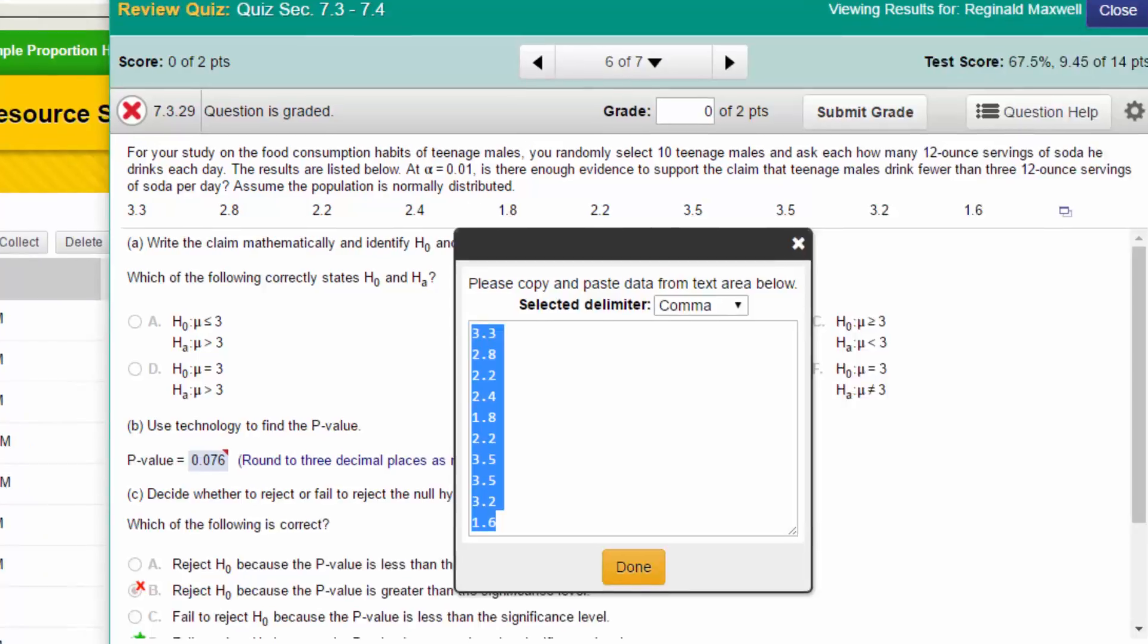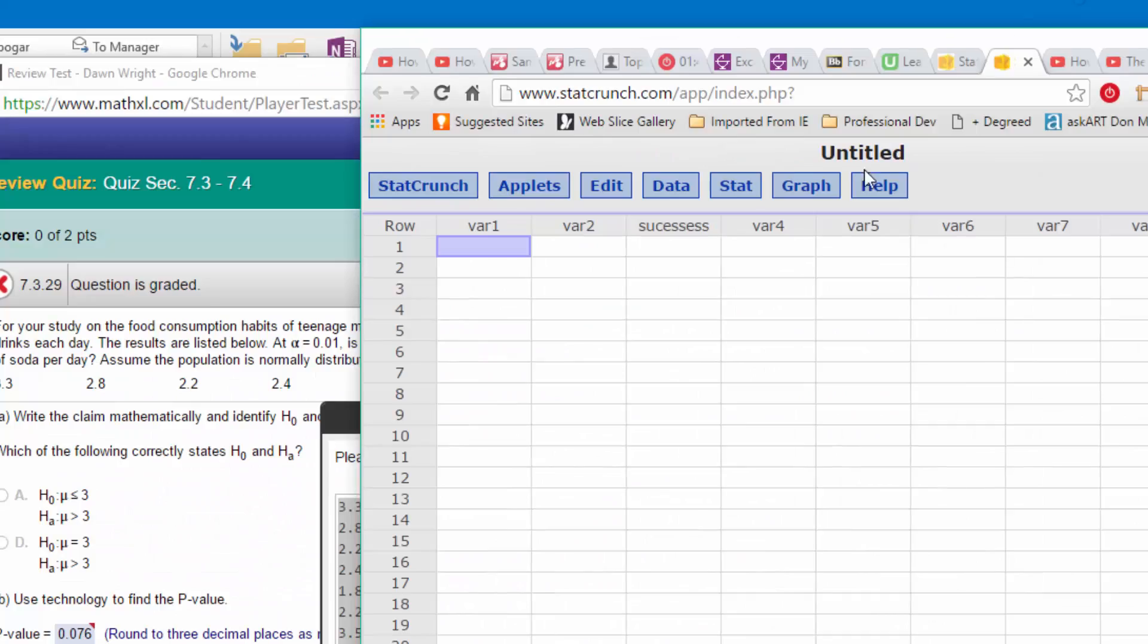Now let's go to StatCrunch and I want to paste in that data, so Control V. Now I've got the data in this first column called variable one, and we're going to run a hypothesis test. Let's go to stat.